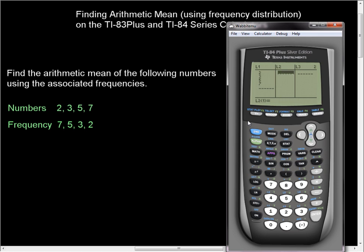Now, if I scroll over to L2, I put my frequencies in, in the exact order. You must put them in the correct order. The calculator will do this and will give you the wrong answer if you do it wrong. And so, 2 happens 7 times, 3 happens 5 times, 5 happens 3 times, 7 happens 2 times.